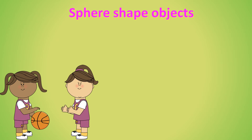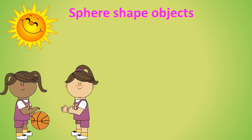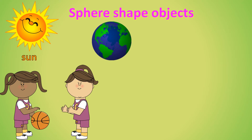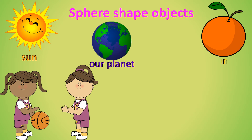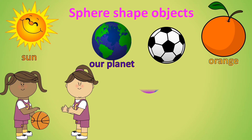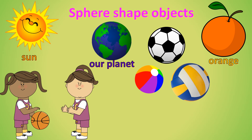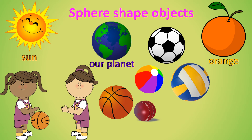Sphere-shaped objects: Sun, moon, planet, oranges, balls. The balls used in every sport are sphere-shaped. All these are sphere-shaped objects.